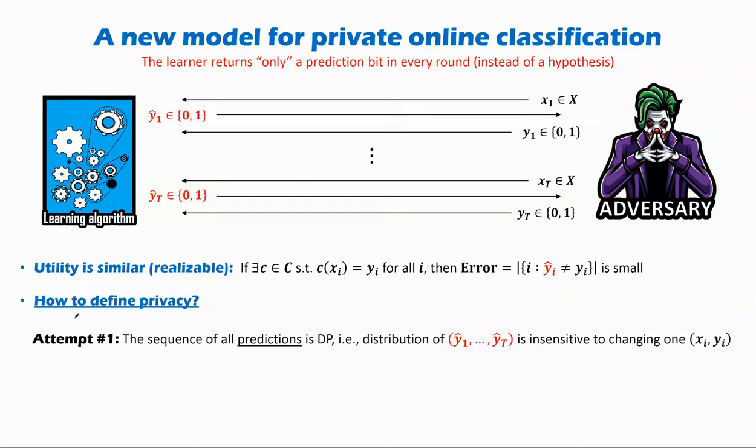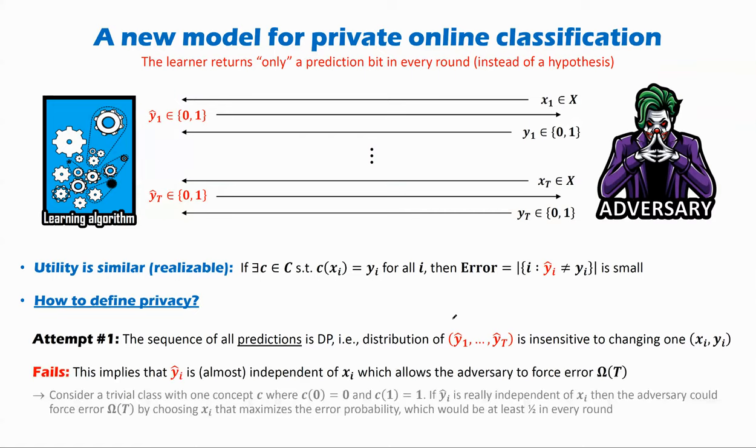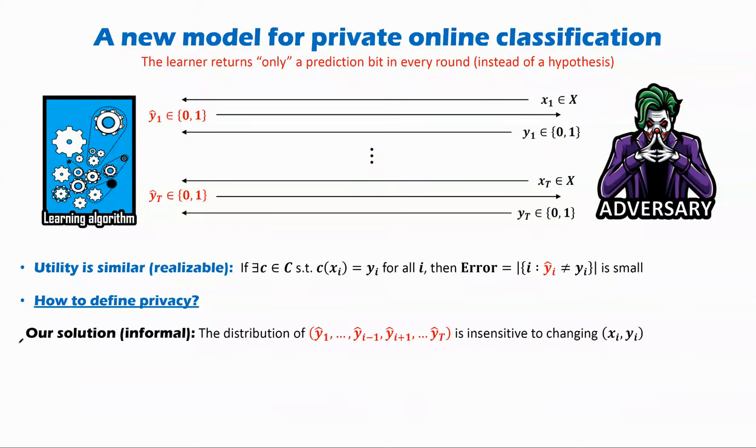As a first attempt, we might try to say what we want is that the vector of all predictions we give out to be differentially private with respect to our inputs. But if you were to think about it for just a little bit, you would see that that's too strong. What we do in this work is require that if you were to change the i-th labeled example given by the adversary, then that should not change by much the outcome distribution of all of the predictions we give out, except for the i-th prediction.